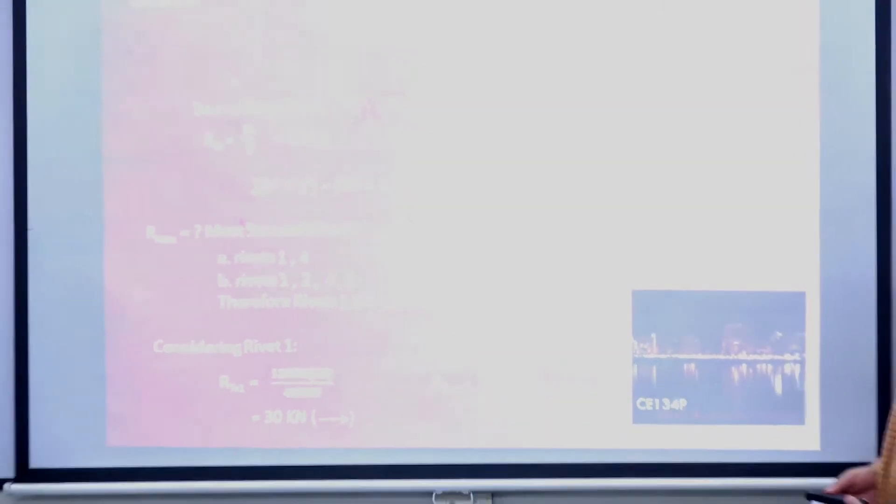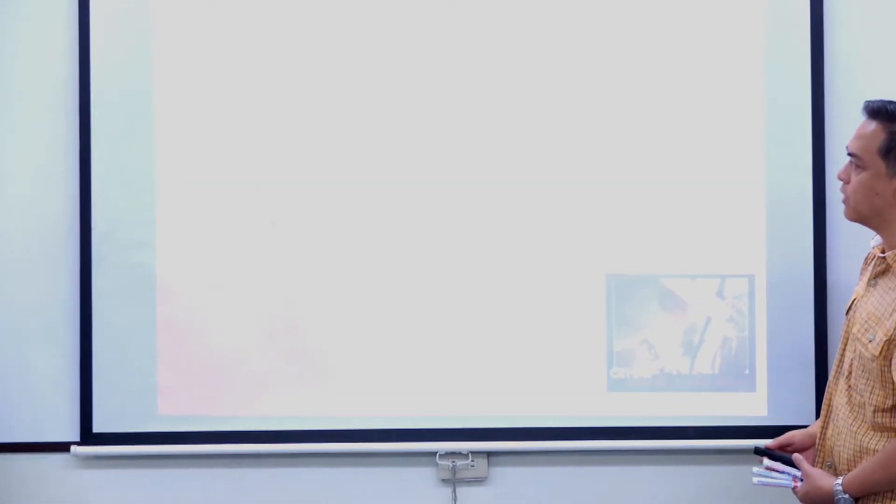Summing up and getting the resultant shear forces for rivet number 1: due to the direct load we have 10 kilonewtons upward, and due to the moment we have a horizontal component and a 22.5 kilonewton upward component. Getting the resultant of these forces gives us approximately 44.25 kilonewtons.